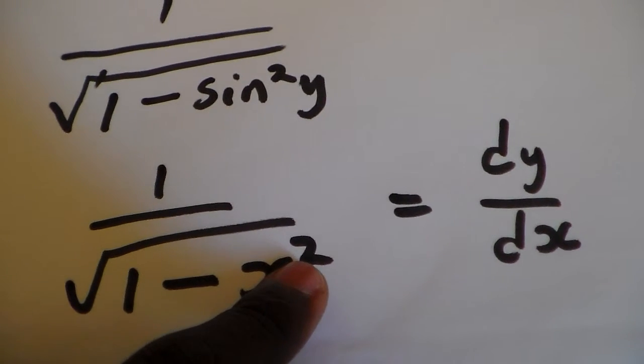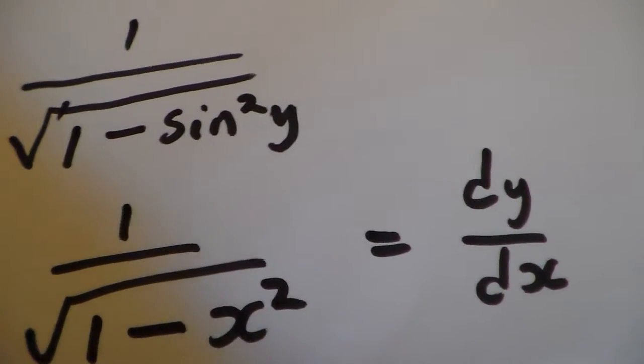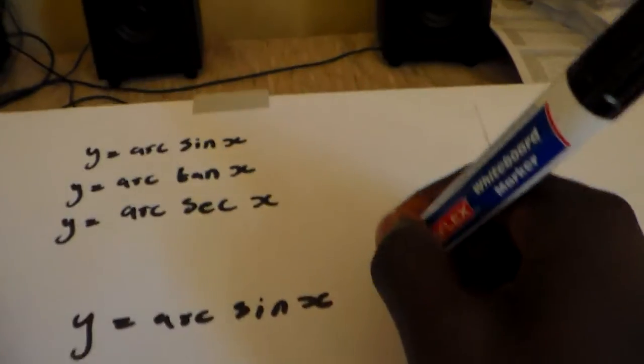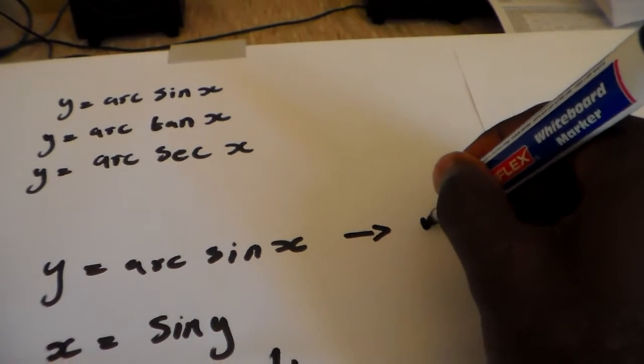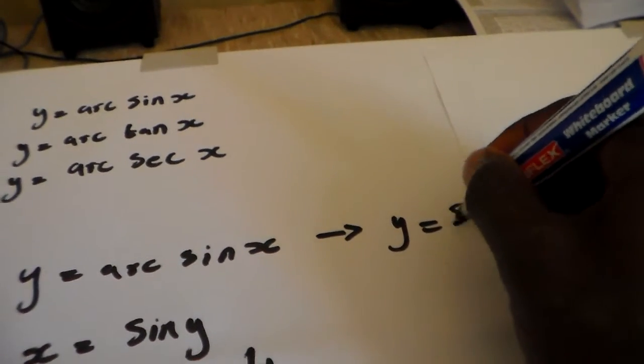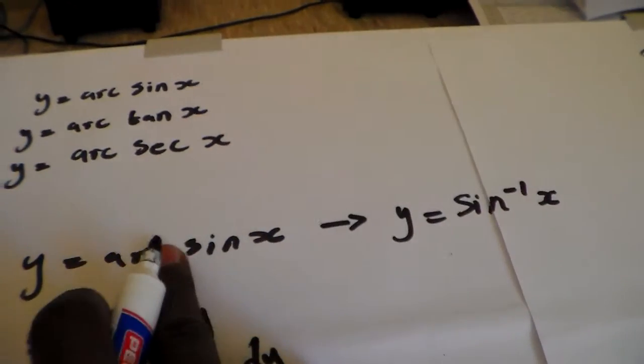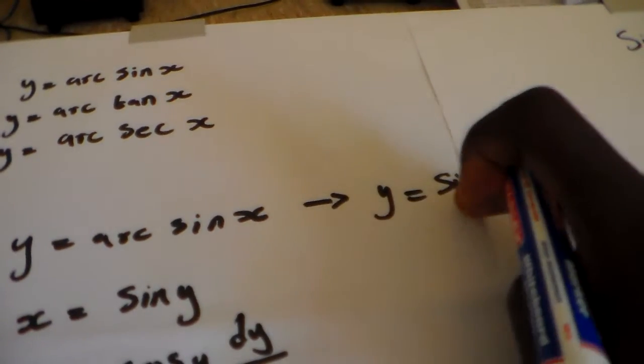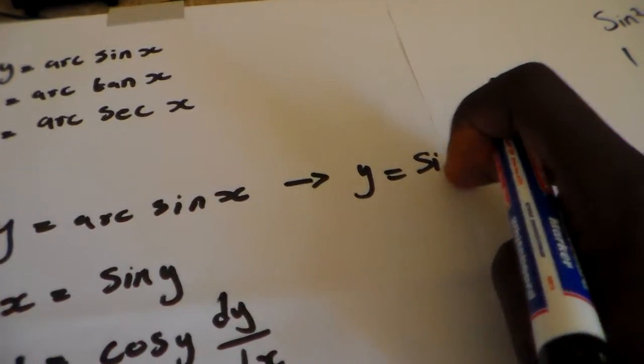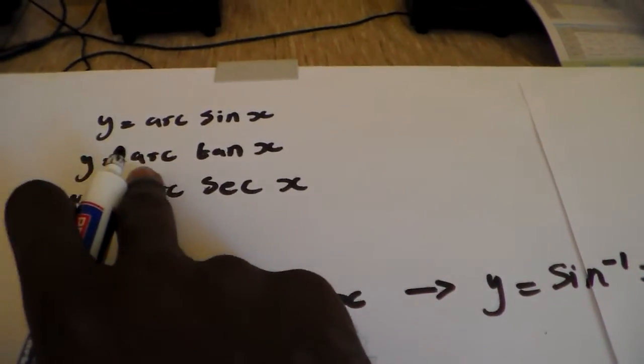This formula is in the formula sheet. If you check your formula sheet, arcsin — which is what we were talking about — is the same as y is equal to sin to the power minus 1 of x. You can write it as arcsin x or as the inverse of sin, which is still arcsin x.